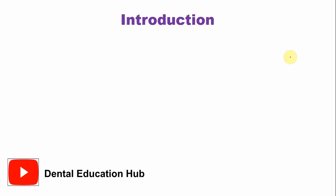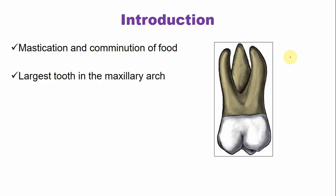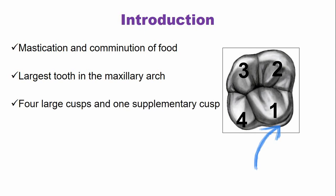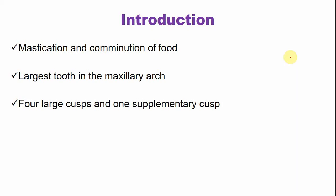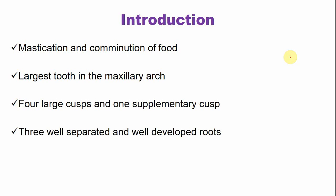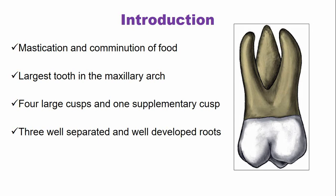The premolars and molars share the common function of mastication or grinding of food into smaller particles. The maxillary permanent first molar is the largest tooth in the maxillary arch. It has four large cusps and one small supplementary cusp known as the cusp of Carabelli. This tooth has three well-separated roots.